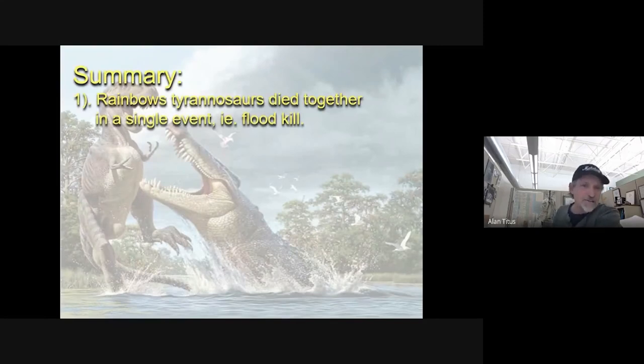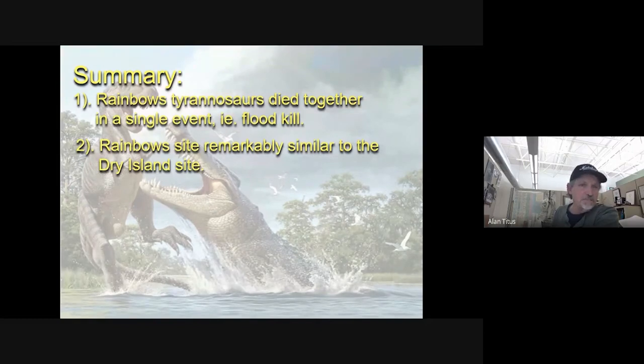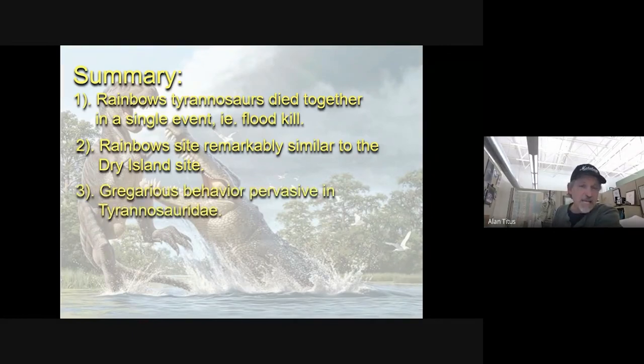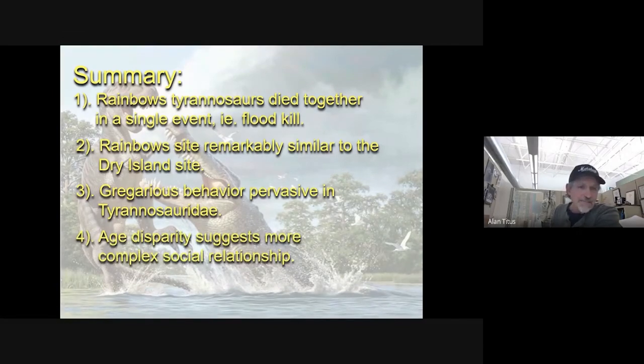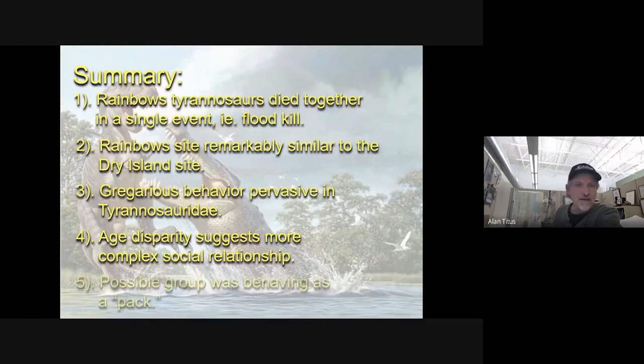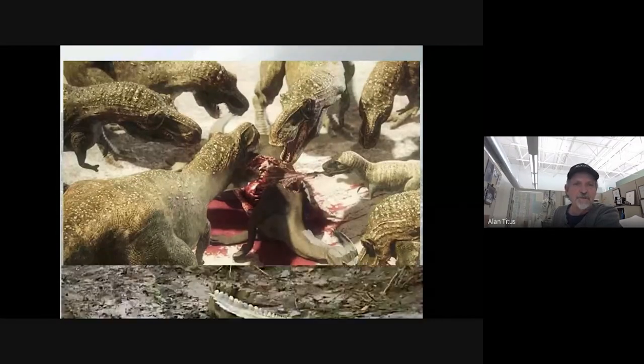So, in summary, rainbows tyrannosaurs, they died together in a single event, i.e., via flood kill. That the rainbows site is remarkably similar to the dry island site, and I would add tentatively to the Daspletosaurus horneri site, the other described tyrannosaur mass mortality in the literature. That this gregarious behavior, at a minimum, it was gregarious, and that it was pervasive in the tyrannosaurids of Laramidia or of Western North America. And that the age disparity within all of the, or at least the dry island and rainbow sites suggest that there may be a more complex social relationship than just gregariousness. So, with that, I'll leave you with pondering whether these groups could behave as a pack, as Phil Currie has so vocally advocated for. So, are we looking at this, or this? Okay, that's all I have.